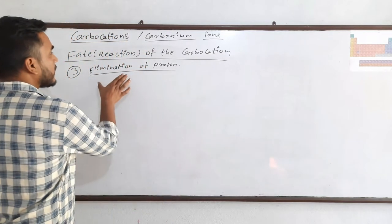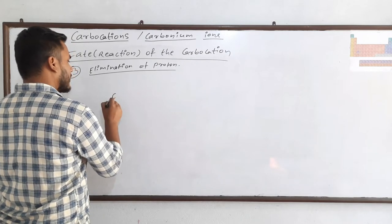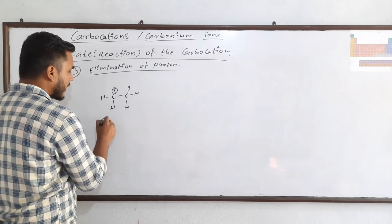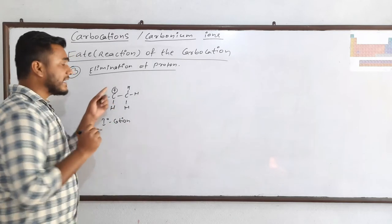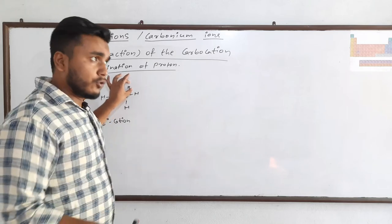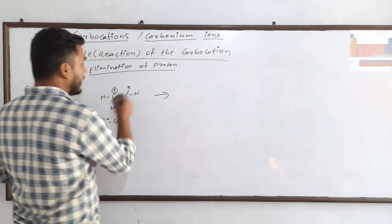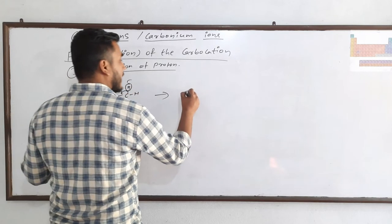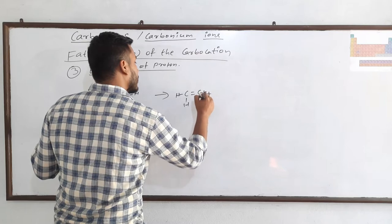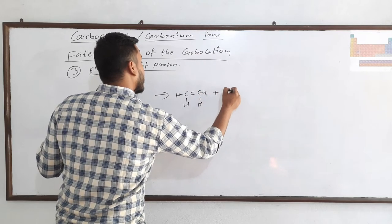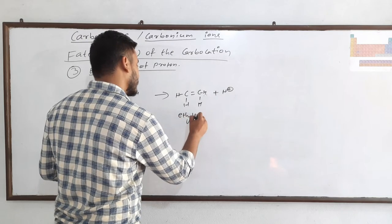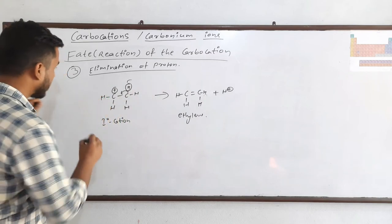The third fate is elimination of protons. A carbocation may eliminate a proton to become more stable. For example, a 1° carbocation (CH₃CH₂⁺) can lose a proton: the adjacent C-H bond shifts to form a double bond, the positive charge disappears, and ethylene (CH₂=CH₂) is formed. This is the elimination of proton reaction.